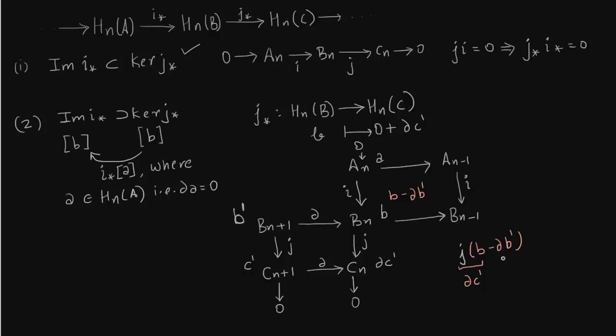So if we are able to show that this map goes to 0 then we will be able to lift it to a by the simple property that kernel of j is equal to image of i since An, Bn and Cn is an exact sequence. And this is true because after all you say j(b) is nothing but δc'. This is from the start we said by definition.